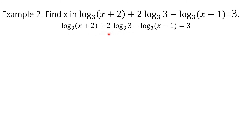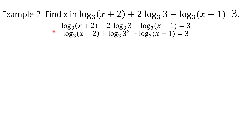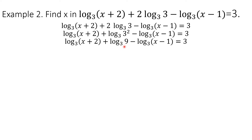Notice the second logarithm — there is a factor of 2 aside from the logarithm itself, so we will use the power law on this part. The factor 2 will become the exponent of 3. All other parts of the equation are retained except for the second logarithm. So that becomes logarithm of 3 squared to the base 3. We know that 3 squared is 9, so this becomes logarithm of 9 to the base 3.